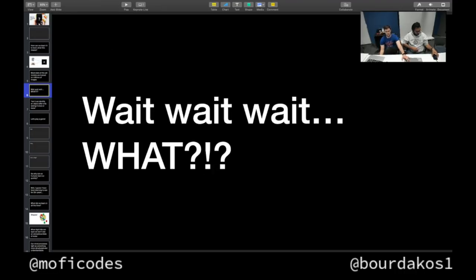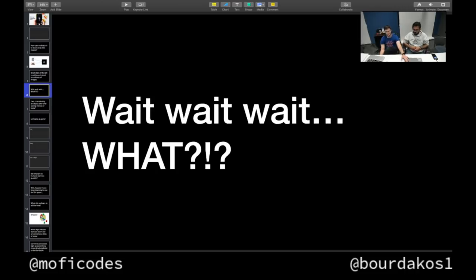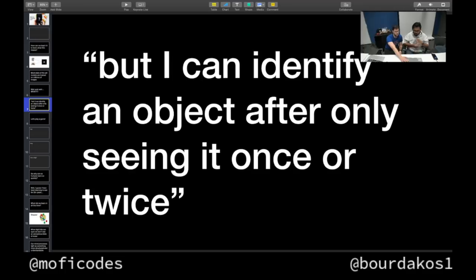Most state-of-the-art models are trained on millions and millions of images, with thousands of pictures of cats for AI to actually learn what a cat is. You might be thinking — I can identify an object having only seen it a couple of times. You show me a brand new object and if you show it to me again I recognize it easily. So why does it take so long for AI to learn? Let's play a little bit of a game.